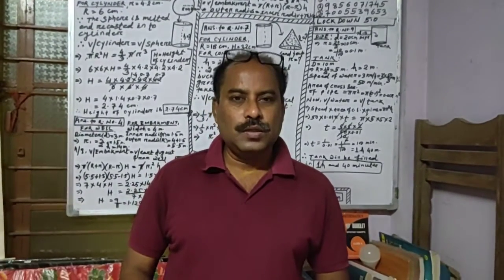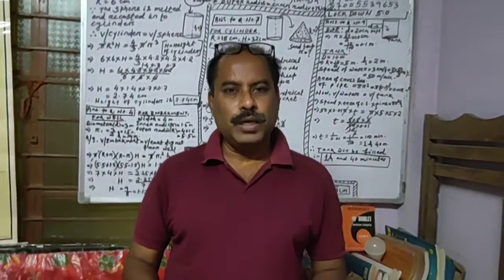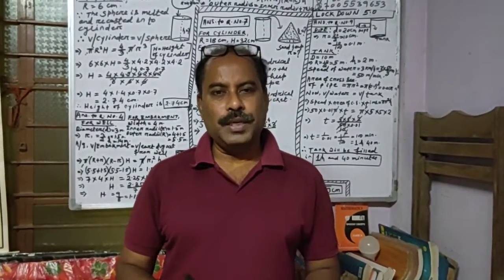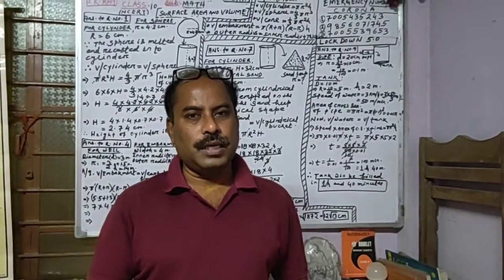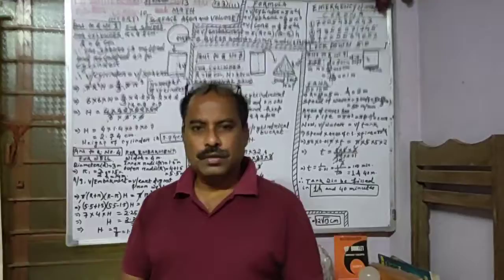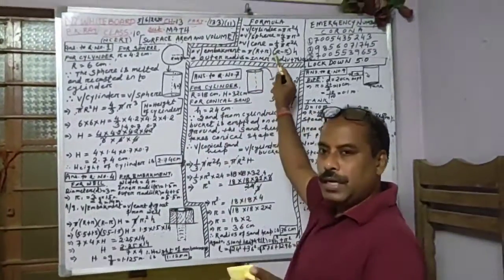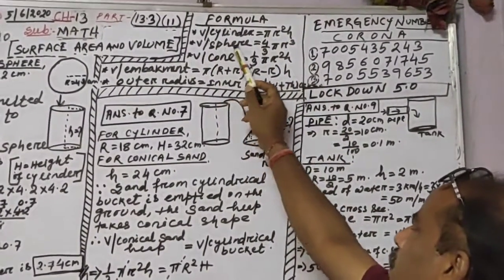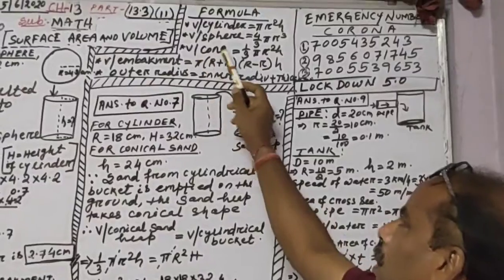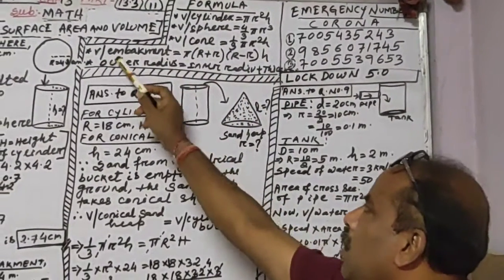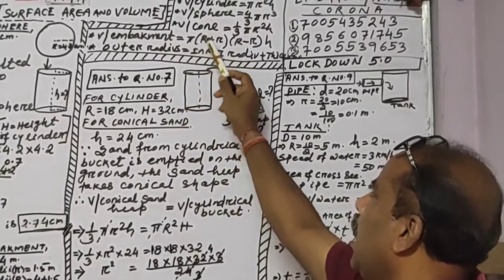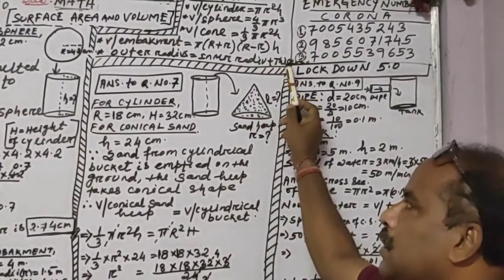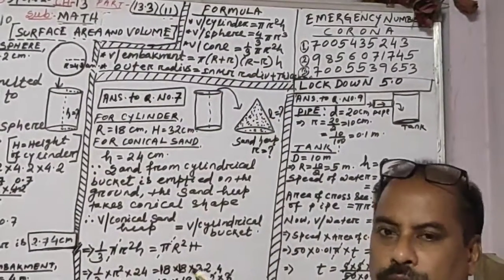Dear students, welcome to my whiteboard program. Today we continue chapter 13, surface area and volume. Today's class exercise is 13.3. Here are the formulas related to 13.3: volume of cylinder = πr²h, volume of sphere = 4/3 πr³, volume of cone = 1/3 πr²h, and volume of embankment = π(R + r)(R − r)h. Outer radius equals inner radius plus thickness. These formulas we will use in this exercise.